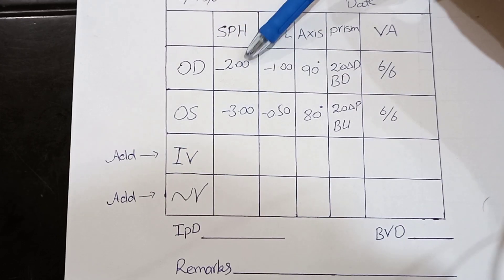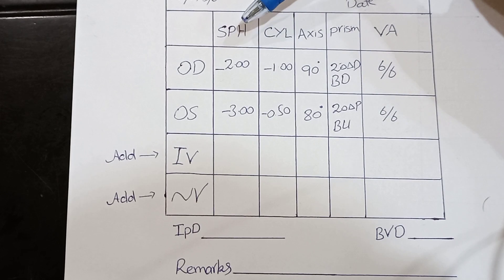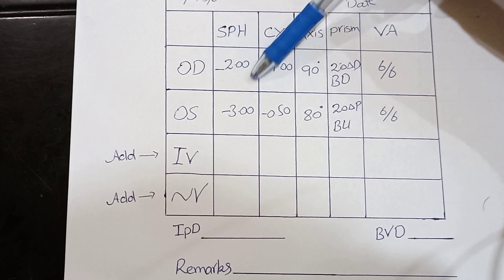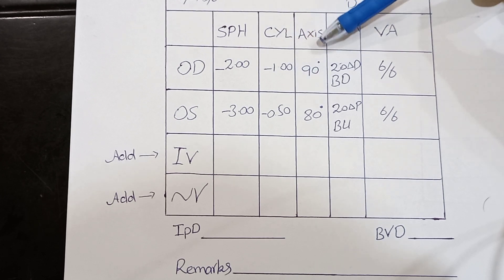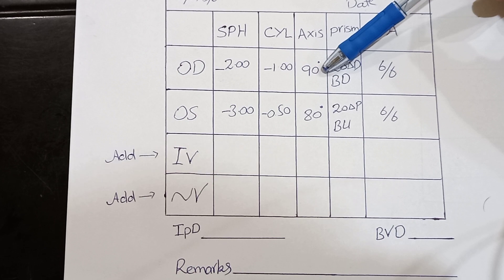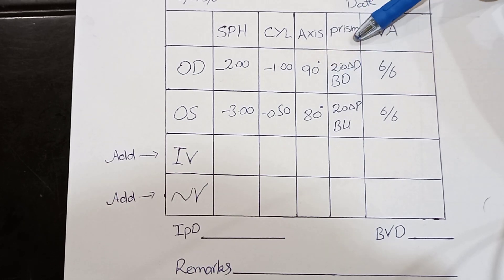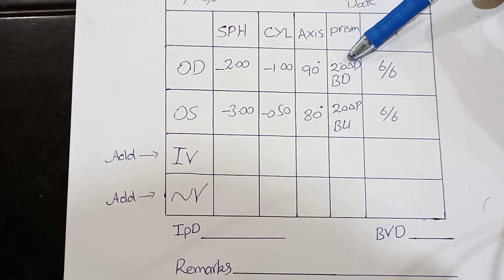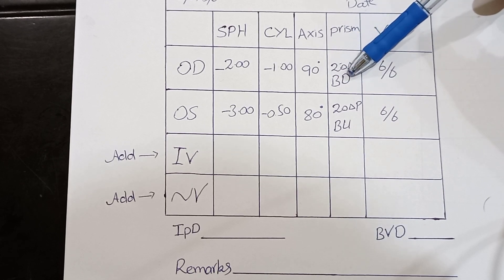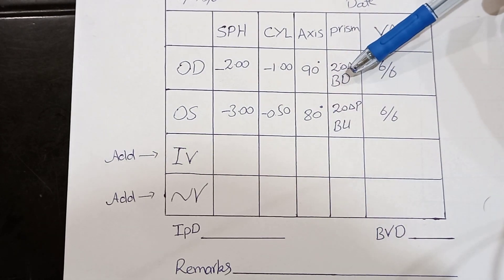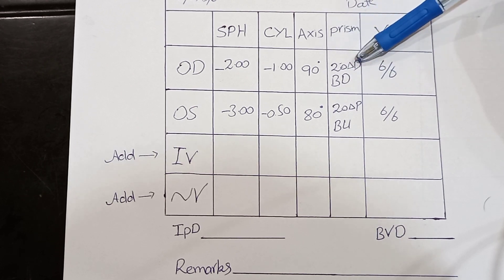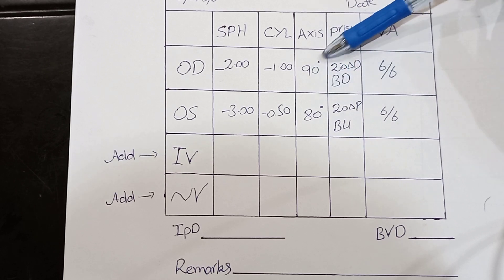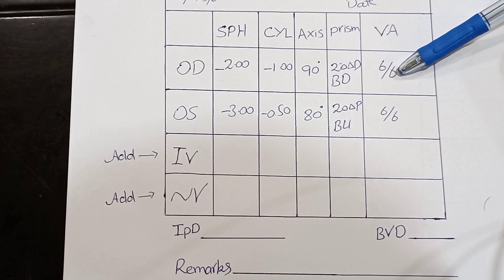Using example values for a supposed patient: for the right eye (OD), we have minus 2 spherical (myopic correction), minus 1 cylindrical, axis 90 degrees, and a prism of 20 prism diopters base down. The visual acuity is 6/6. For the left eye (OS), the values are minus 3 spherical, minus 0.5 cylindrical, axis 80 degrees, and 20 prism diopters base up.